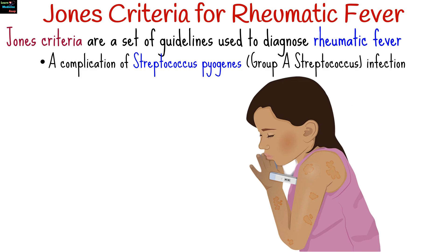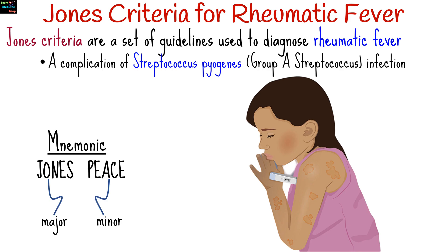The Jones criteria are a set of guidelines used to diagnose rheumatic fever, a complication of Streptococcus pyogenes infection. The mnemonic 'Jones Peace' can help remember these criteria, which are divided into major and minor categories.